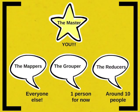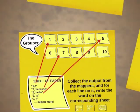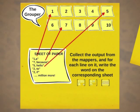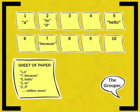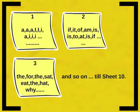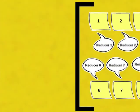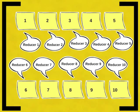The grouper gets ten numbered papers from you — paper one through ten. For each line in the mapper sheets, if it says one, the grouper writes it on sheet one; if it says two, on sheet two; and so on. For example, if a mapper line says '1,a', the grouper writes 'a' on sheet one. If it says '2,if', they write 'if' on sheet two. If it says '5,hello', they write 'hello' on sheet five. Once done, the grouper distributes each sheet to one reducer — sheet one to reducer one, sheet two to reducer two, and so on.